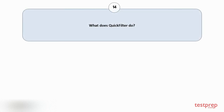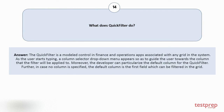Question number 14: What does QuickFilter do? The QuickFilter is a modeled control in finance and operations apps associated with any grid in the system. As the user starts typing, a column selector drop-down menu appears so as to guide the user towards the column that the filter will be applied to. Moreover, the developer can particularize the default column for the QuickFilter. Further, in case no column is specified, the default column is the first field which can be filtered in the grid.